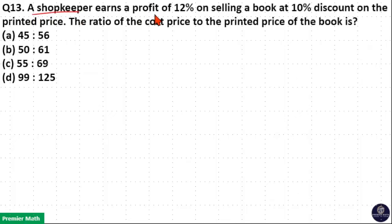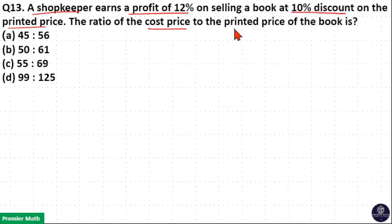A shopkeeper earns a profit of 12% on selling a book at 10% discount on the printed price. The ratio of cost price to the printed price of the book is?